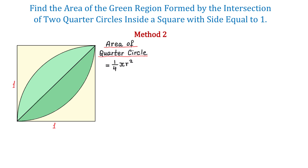To find the area of the quarter circle, we replace the radius with 1 in the formula. We will have 1/4 times π times 1 squared, which makes π over 4.